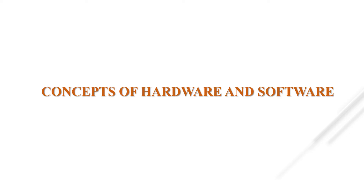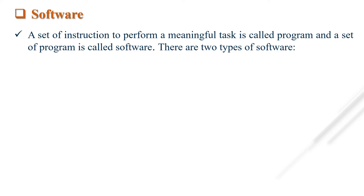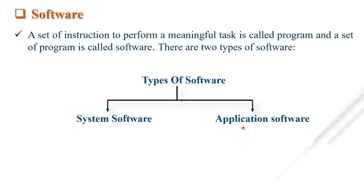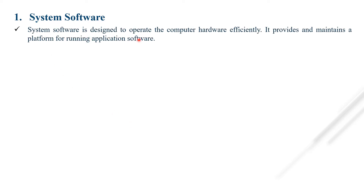The next topic is the concept of hardware and software. A set of instructions to perform a meaningful task is called a program, and a set of programs is called software. There are basically two types of software: system software and application software. System software is designed to operate the computer hardware efficiently and provides a platform for running application software. Examples include Windows 7 and Linux, which are operating systems that provide the platform on which application software can run.